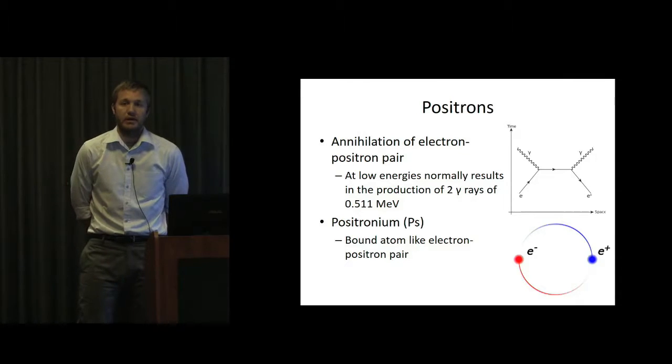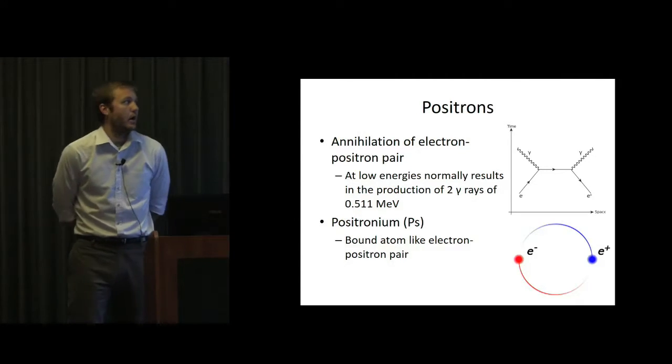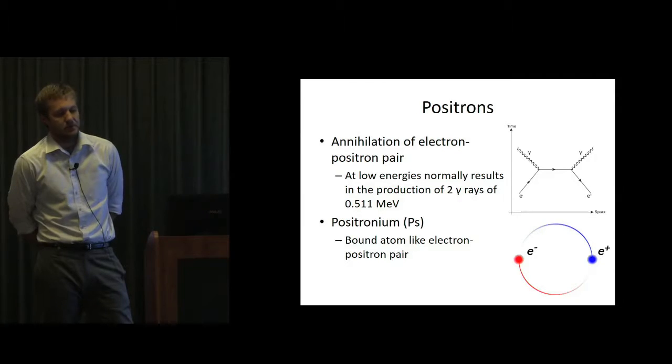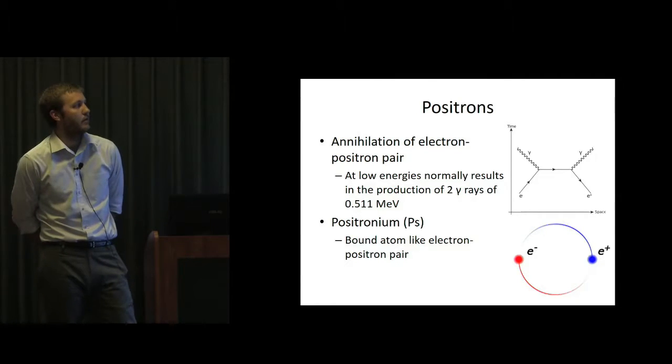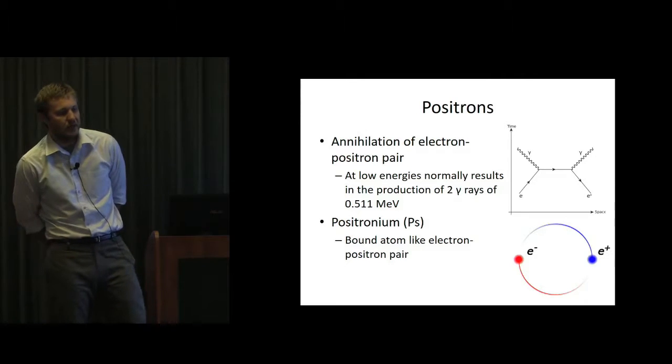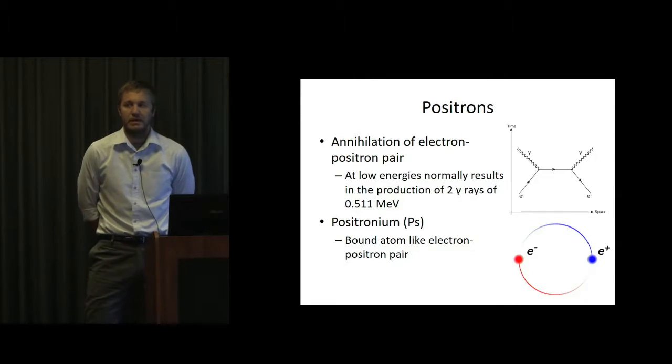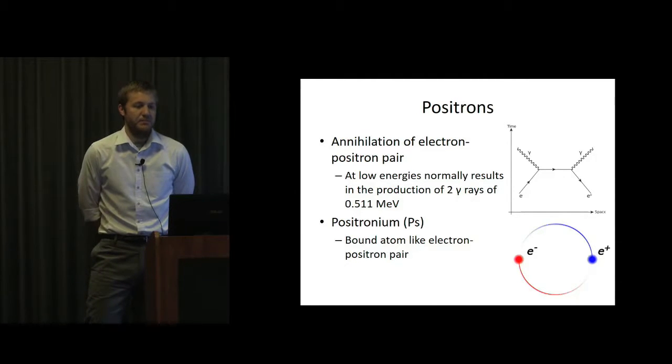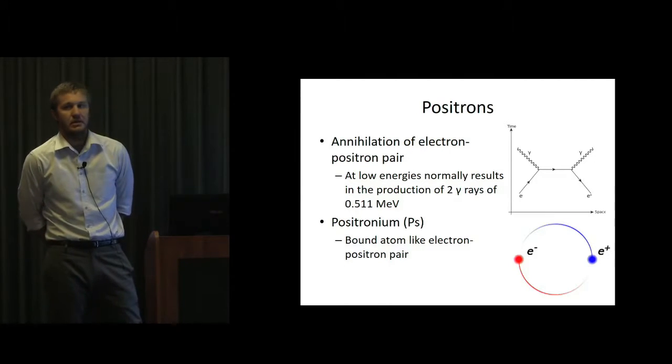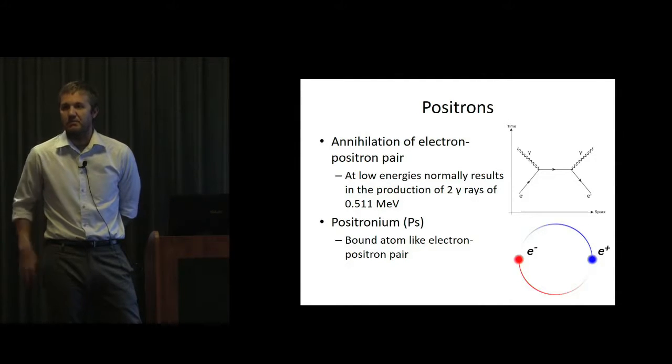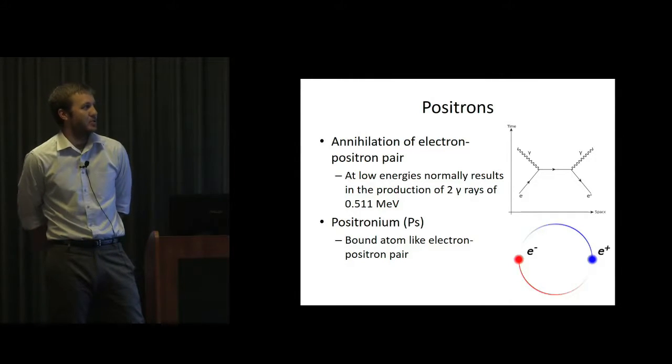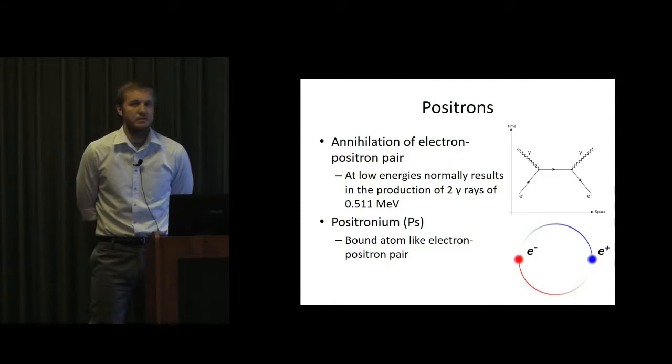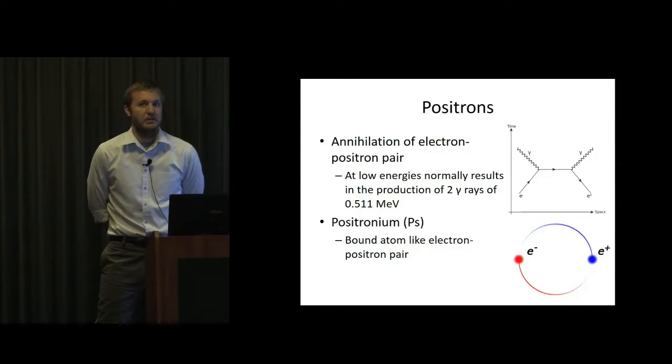Since positron is antimatter, we know when it comes into contact with an electron, we have annihilation. At low energies, this normally results in the production of two gamma photons of 0.511 MeV, where 0.511 MeV is the rest mass of the electron and the rest mass of the positron. Depending on the spin states, you can get three gamma rays. If it's higher energy, you can get four, six, or eight. But for the experimental systems where there's data, the most recent experiments with positron binding, you're normally going to get two gamma rays. This is what you observe in your detector to determine if annihilation has occurred.